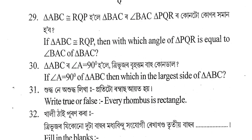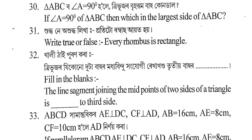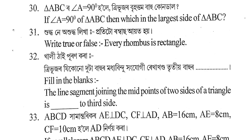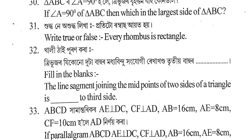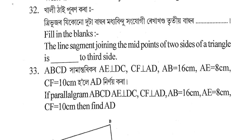Next question: Triangle ABC is congruent to triangle RQP. Identify which sides and angles of triangle PQR are equal to those of triangle BSC. Also: The line segment joining the midpoints of two sides of a triangle is parallel to the third side.